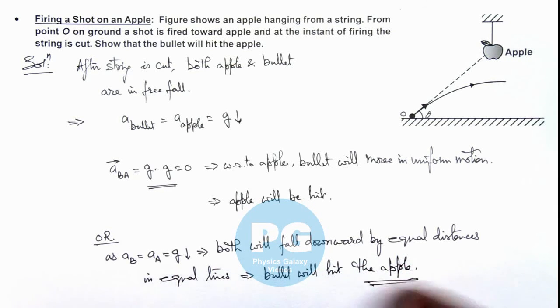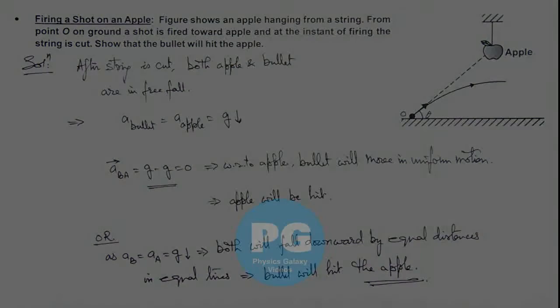So this is the way how we can prove that finally the bullet will hit the apple. Both ways are important to explain. You must keep all these methods in your mind.